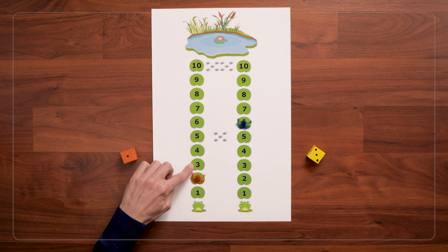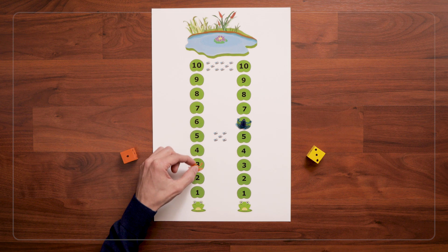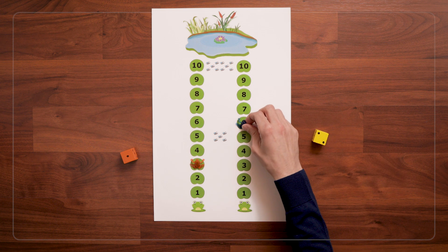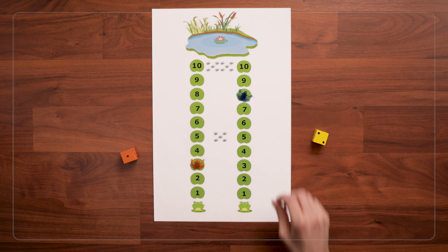So my friend here rolls a 1. And instead of saying 1, she says 3. Because she's hopping forward to that 3. And then I go again and get a 2. And I'm going to say 7, 8.